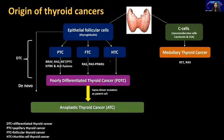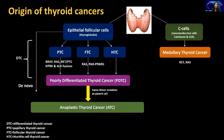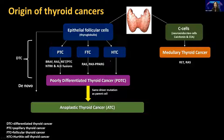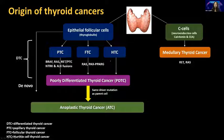Showing origins of thyroid cancer: there are distinct mutations in papillary, follicular, and Hürthle cell. As these become less differentiated, the driver mutation is retained in poorly differentiated and anaplastic, but they gather new mutations. The more common mutations in medullary thyroid cancer are RET and RAS.